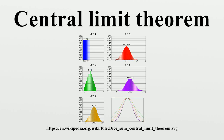Distributions Xi which can arise in this way are called stable. Clearly, the normal distribution is stable, but there are also other stable distributions, such as the Cauchy distribution, for which the mean or variance are not defined. The scaling factor bn may be proportional to n^c for any c ≥ ½, and it may also be multiplied by a slowly varying function of n. The law of the iterated logarithm specifies what is happening in between the law of large numbers and the central limit theorem. Specifically, it says that the normalizing function intermediate in size between n of the law of large numbers and √n of the central limit theorem provides a non-trivial limiting behavior.